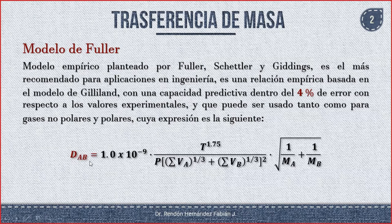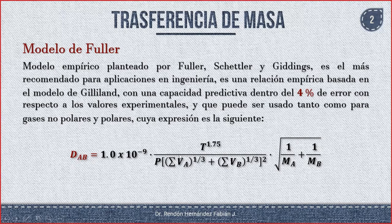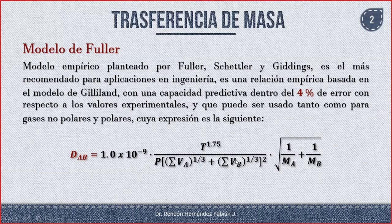El modelo de Fuller es: la difusión de A hasta B es igual a 1.0×10⁻⁹ por la temperatura a la 1.75, dividido entre la presión multiplicado por (ΣV_A^(1/3) + ΣV_B^(1/3))², todo esto multiplicado por la raíz de (1/M_A + 1/M_B). La modificación respecto a Gilliland es el exponente 1.75 y el uso de la sumatoria de volúmenes.